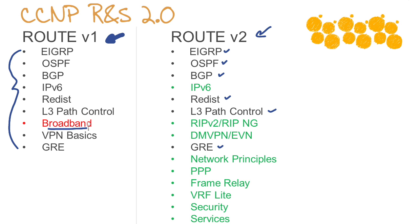Broadband takes a back seat in the new exam, so we don't have to brush up on all those different types of broadband and get into detail on things like DSL and things of that nature. But notice there is a dramatic expansion of topics in the new Route. Cisco looked at their scaling back that they did in Route version 1, and apparently they didn't like that very much. Notice I've got in green, meaning a new topic.